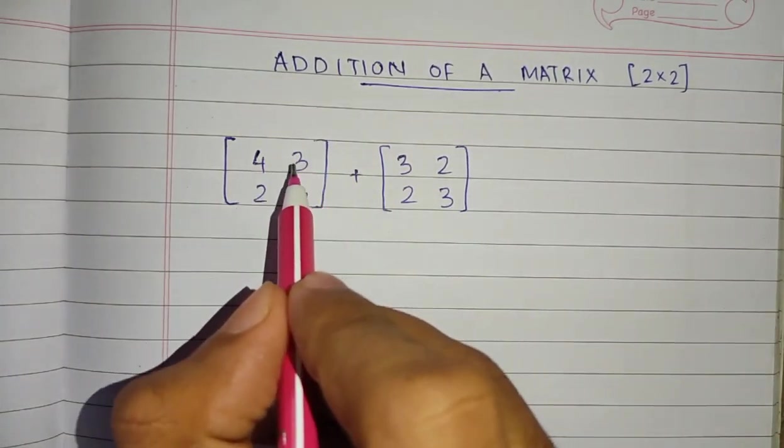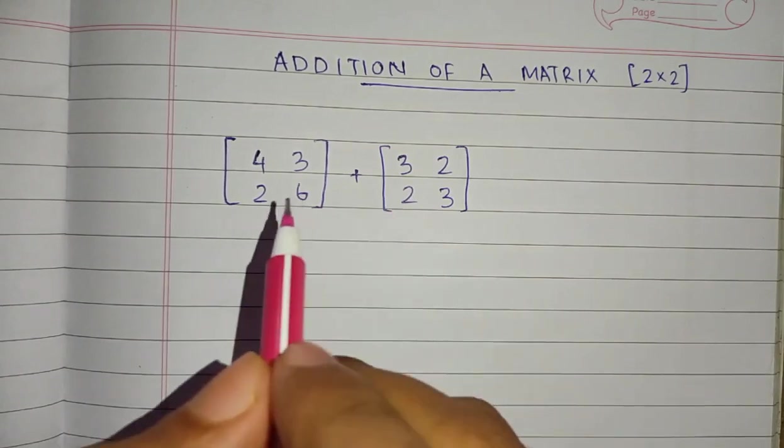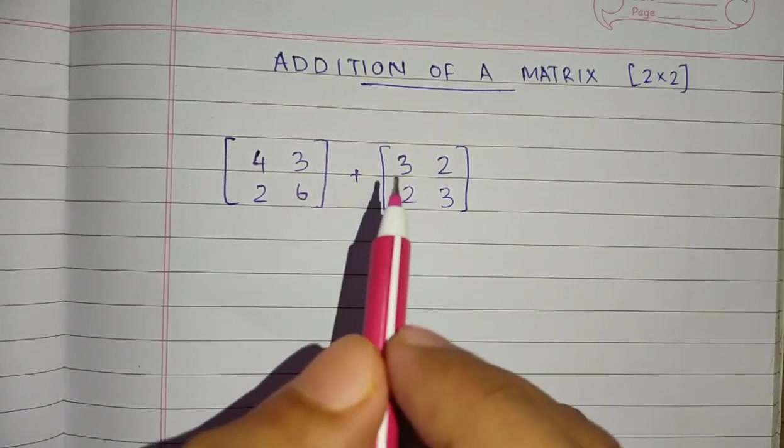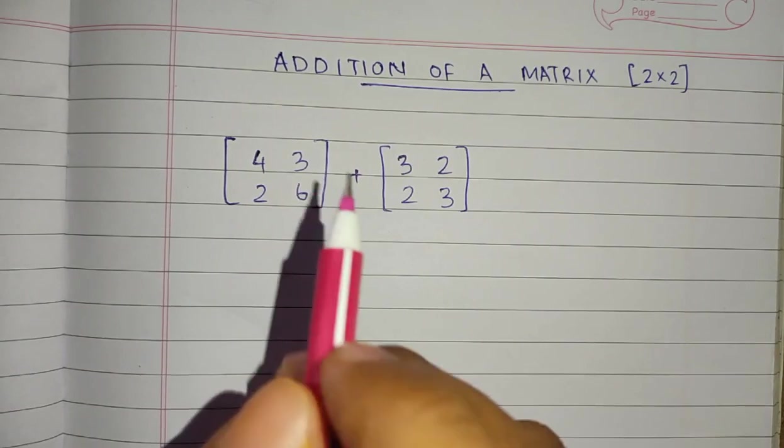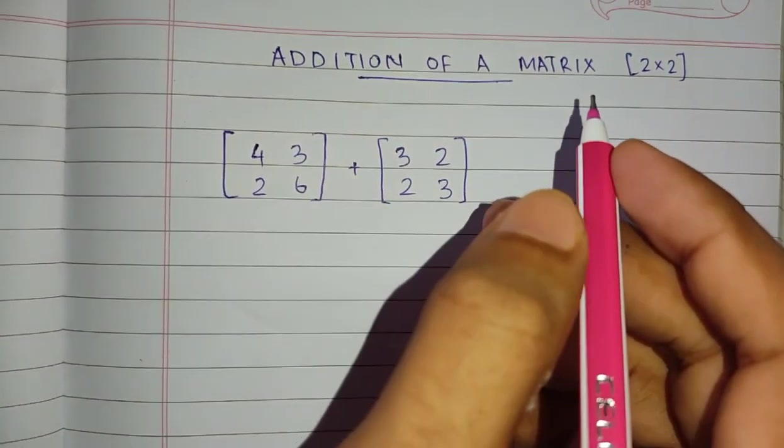The only thing we should check first is that the number of rows and the number of columns in both matrices should be equal. Then only we can do the addition. If they're not equal, it's not possible to add the matrices.